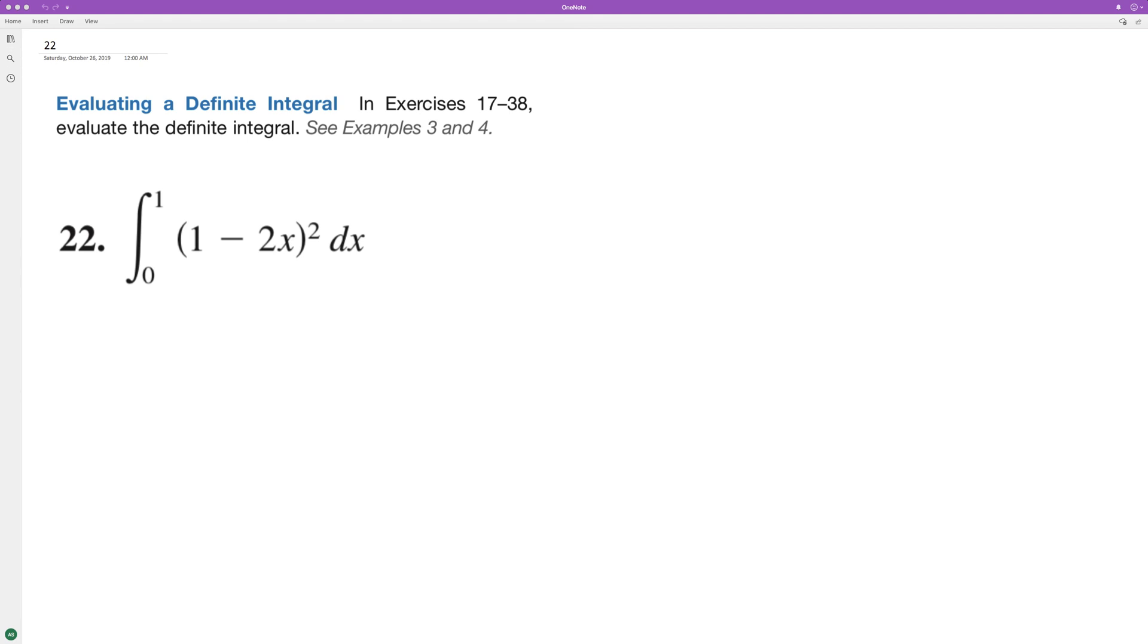from 0 to 1. So to do this, it's easier to just multiply this out. So we end up with 1 minus 4x squared, not 4x squared, just 4x and then plus 4x squared.